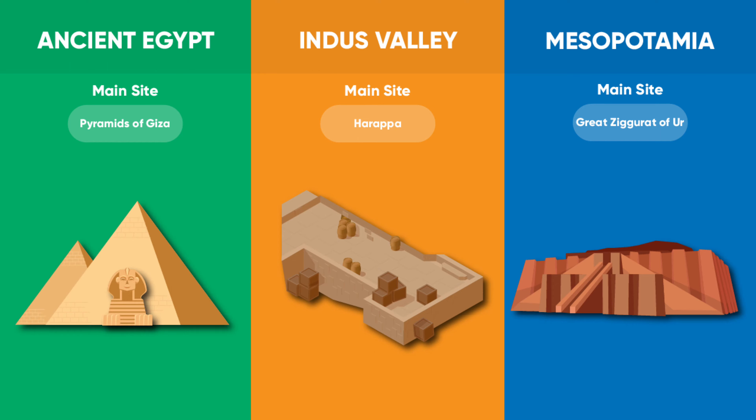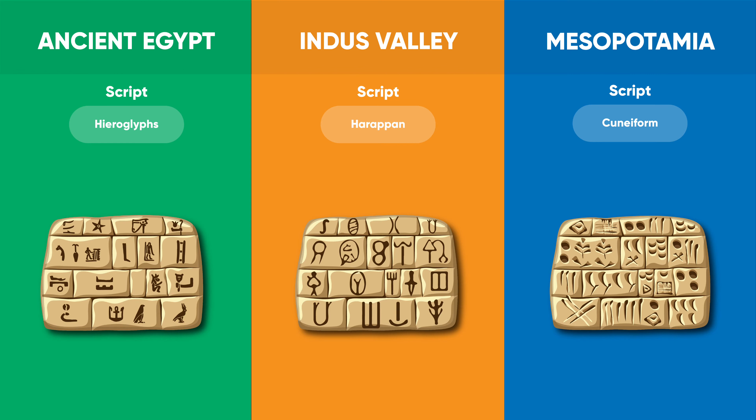The ziggurat is the most distinctive architectural invention of the ancient Near East. Like an ancient Egyptian pyramid, an ancient Near Eastern ziggurat has four sides and rises up to the realm of the gods. One of the largest and best preserved ziggurats of Mesopotamia is the Great Ziggurat.